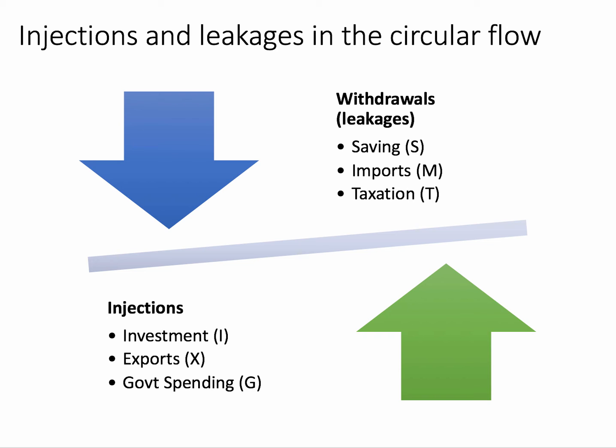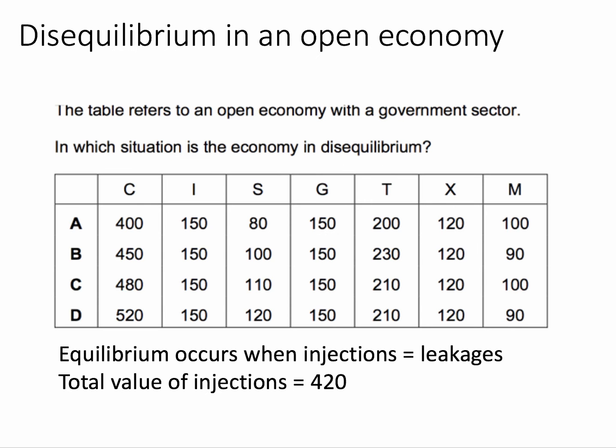The question talks about there being an open economy with the government sector, so we need to consider all three leakages and all three injections. We're looking for equilibrium, which is where injections equal leakages. From the table we can calculate that the total value of injections into the circular flow remains constant at 420 — I plus G plus X gives 420.